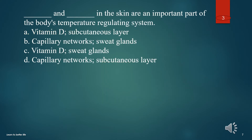What two structures in the skin are an important part of the body's temperature regulating system? A. Vitamin D, subcutaneous layer. B. Capillary networks, sweat glands. C. Vitamin D, sweat glands. D. Capillary networks, subcutaneous layer. The answer is B. Capillary networks, sweat glands.